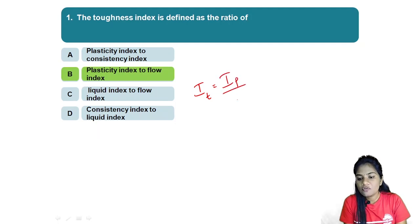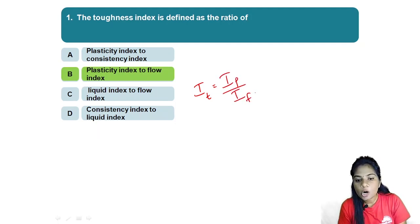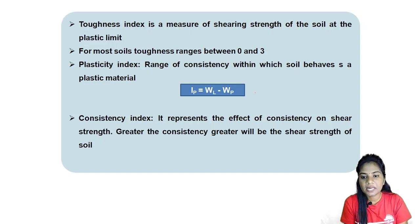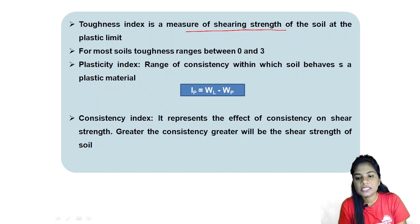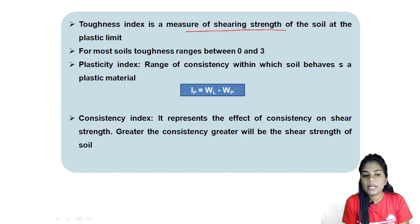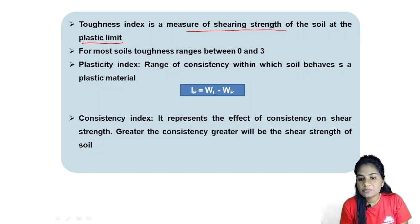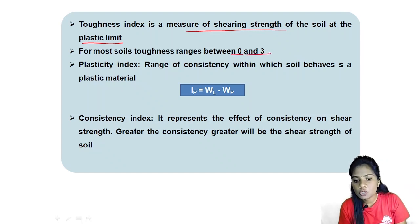The toughness index is a measure of shearing strength of the soil at the plastic limit. For most soils, the toughness index ranges between 0 and 3.